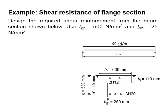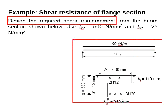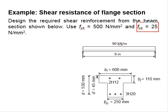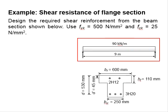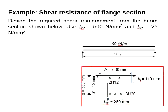Let us try an example to design for the shear resistance of the flank section. The question asks us to design the required shear reinforcement for the beam shown here. The steel grade is given as 500 N/mm² and the concrete grade is 25 N/mm². The beam section is simply supported over a 9 m span and is used to sustain a UDL load of 90 kN/m. The dimensions of the flank section are given here.